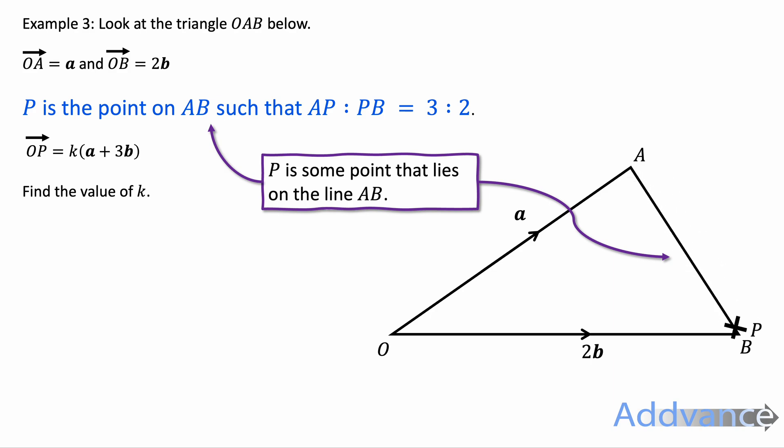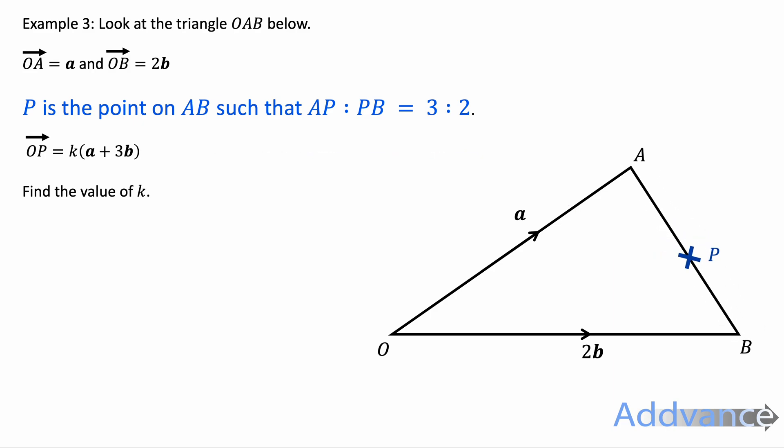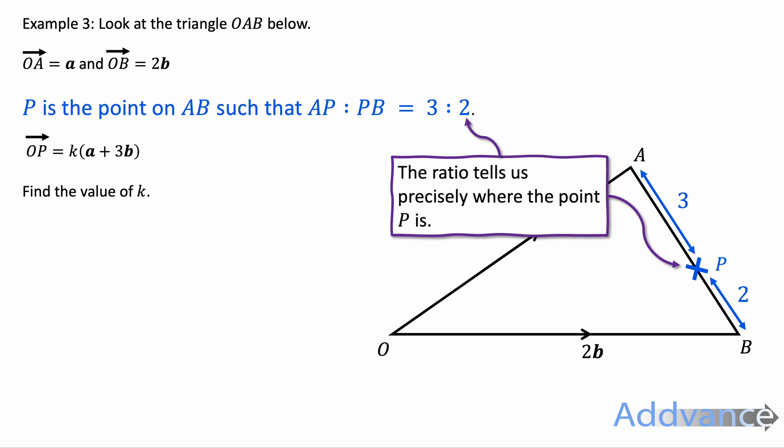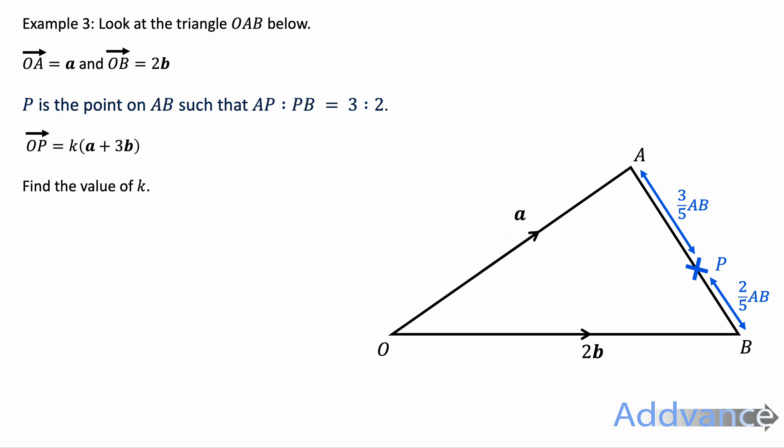It says P is the point on AB such as AP to PB is 3 to 2. So we know that P lies on this line somewhere between A and B. It lies such that the distance from A to P is in a ratio to the length P to B of 3 to 2. And because it's 3 to 2, it will be split into 5, because 3 plus 2 is 5. And so the length from A to P is 3 fifths of AB, and the length PB is 2 fifths of AB. That's what that ratio is telling us.